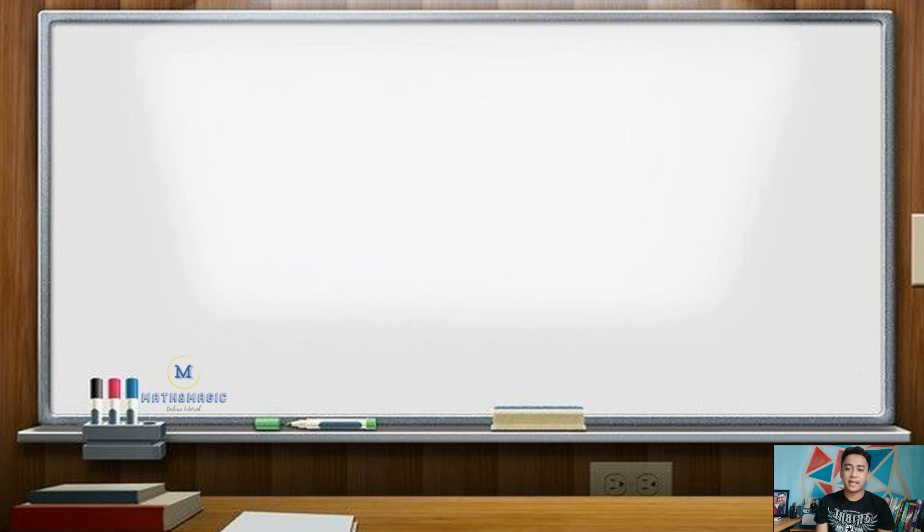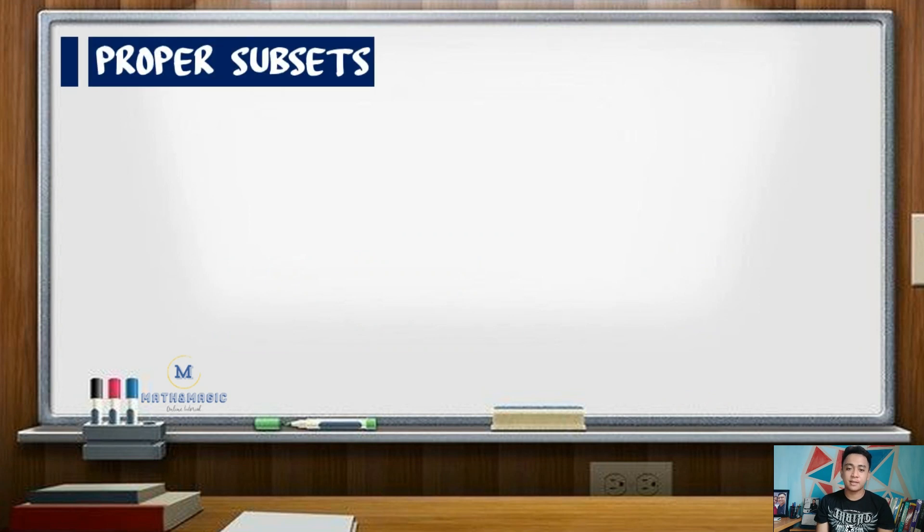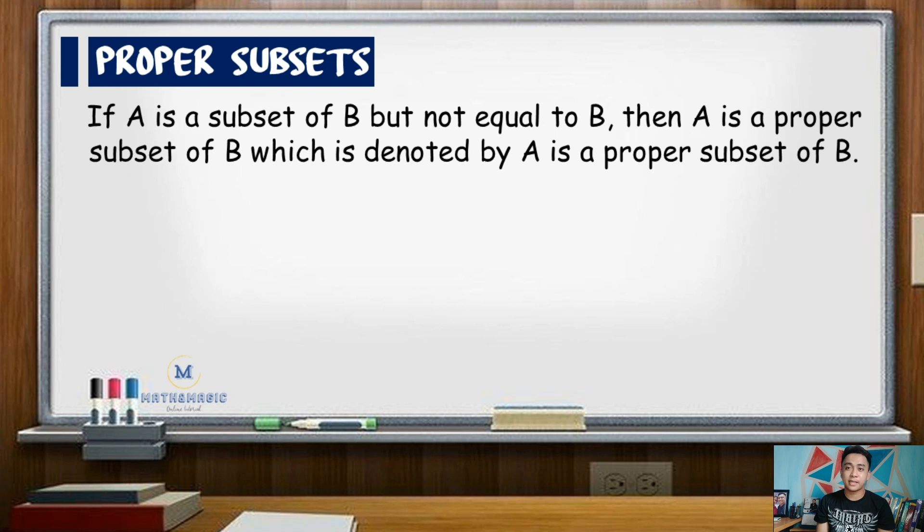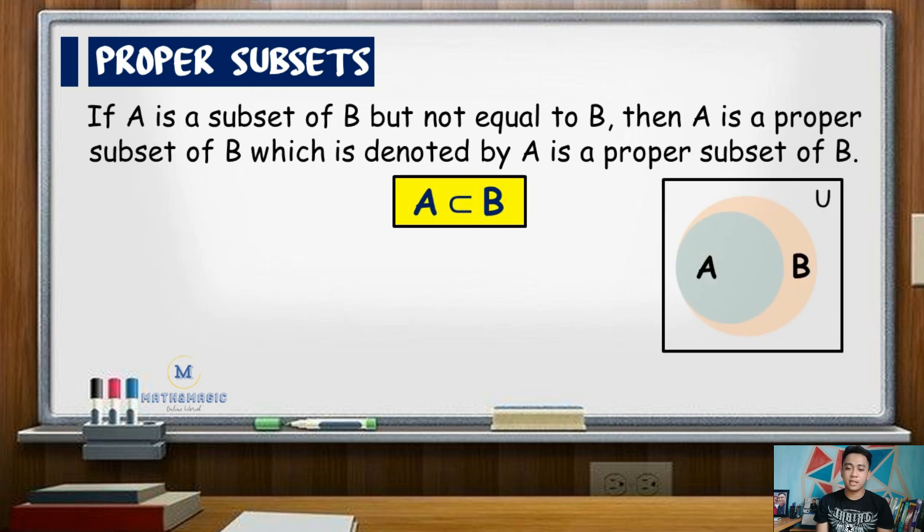Now if set A is a subset of set B but not equal to set B, then A is a proper subset of set B. That can be illustrated by this Venn diagram. As you can see, there are elements of B that are not in set A. So A is a proper subset of B.